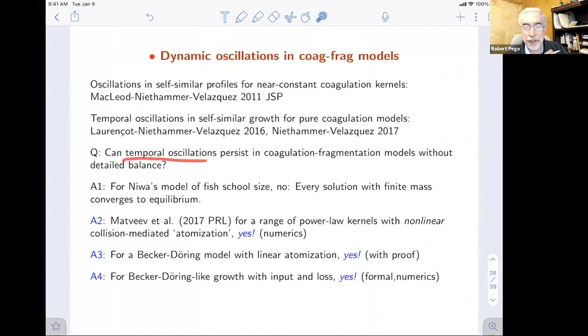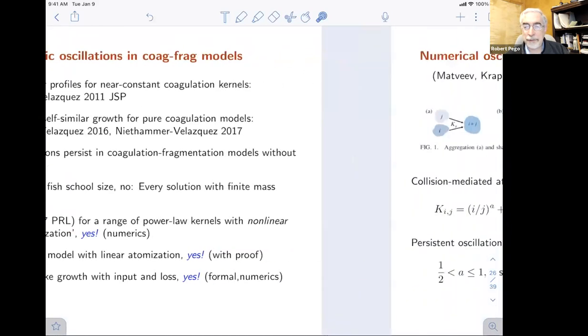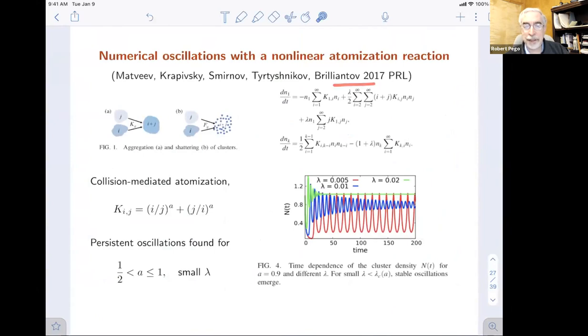The main question here is, can temporal oscillations persist in coagulation fragmentation models without detailed balance? With detailed balance, you expect convergence to equilibrium. We've seen that in this Niwa model - there's convergence to equilibrium. But there's a variety of cases now where it seems temporal oscillations can persist. The first case I know in a closed coagulation fragmentation model where this was noticed was in the physical literature, the numerics of the group of Berlyand in the UK and Krapivsky, in this case where there's an added nonlinear atomization reaction.